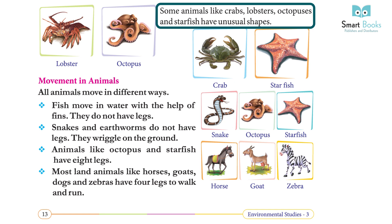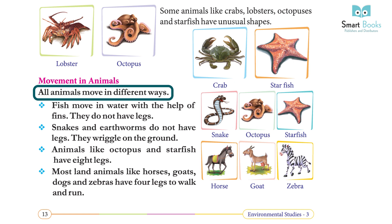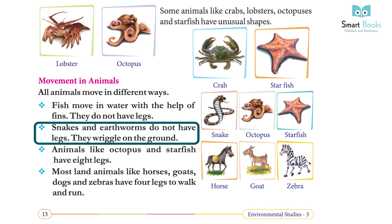Some animals like crabs, lobsters, octopuses, and starfish have unusual shapes. All animals move in different ways. Fish move in water with the help of fins — they do not have legs. Snakes and earthworms do not have legs; they wriggle on the ground.